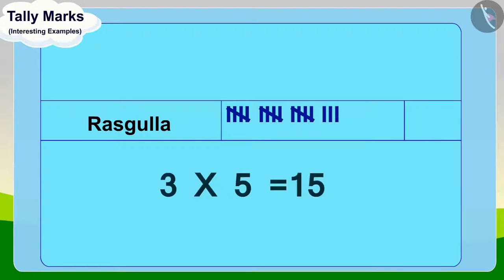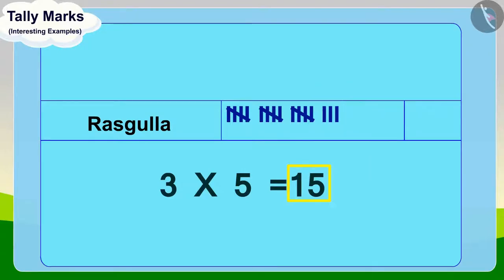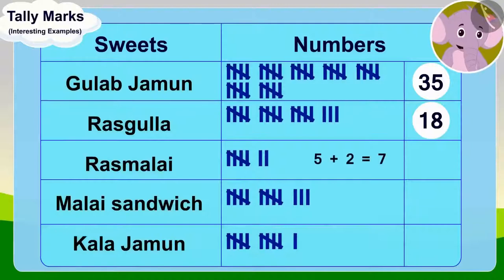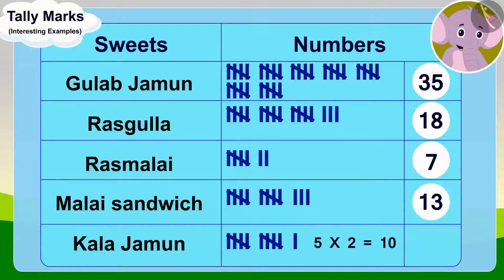We count the remaining tally marks — there are three left. Adding these three remaining tally marks to fifteen gives a total of eighteen. Appu sold a total of eighteen Rasgullahs. Appu found the total number of the remaining sweets and completed the table.